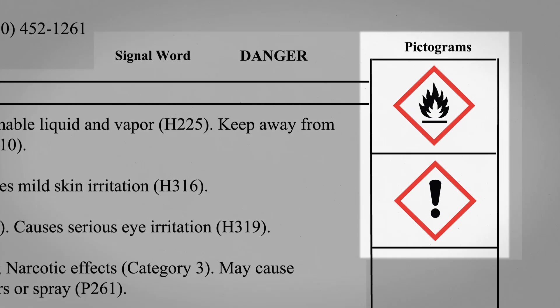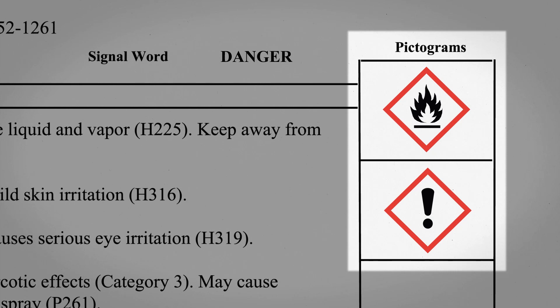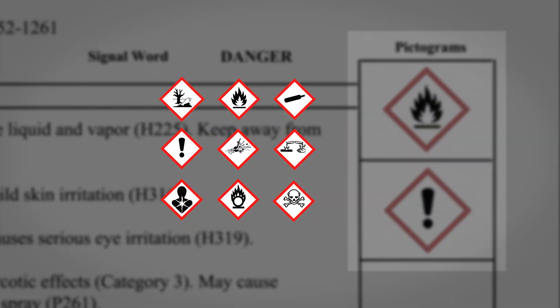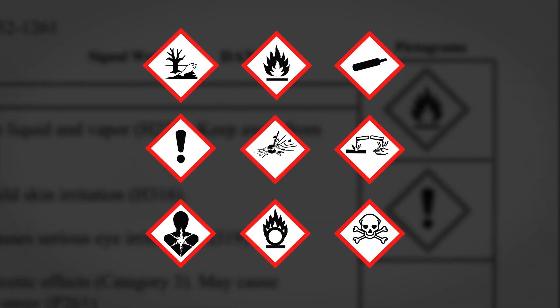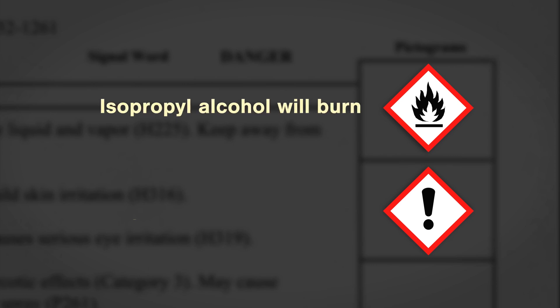The second way a hazard is identified is through a pictogram. There are nine pictograms used to describe all of the possible hazards of chemicals. Isopropyl alcohol has two: the first one, a flame, is easily understood — isopropyl alcohol will burn. The second, an exclamation point, alerts you to other potential hazards of this chemical.